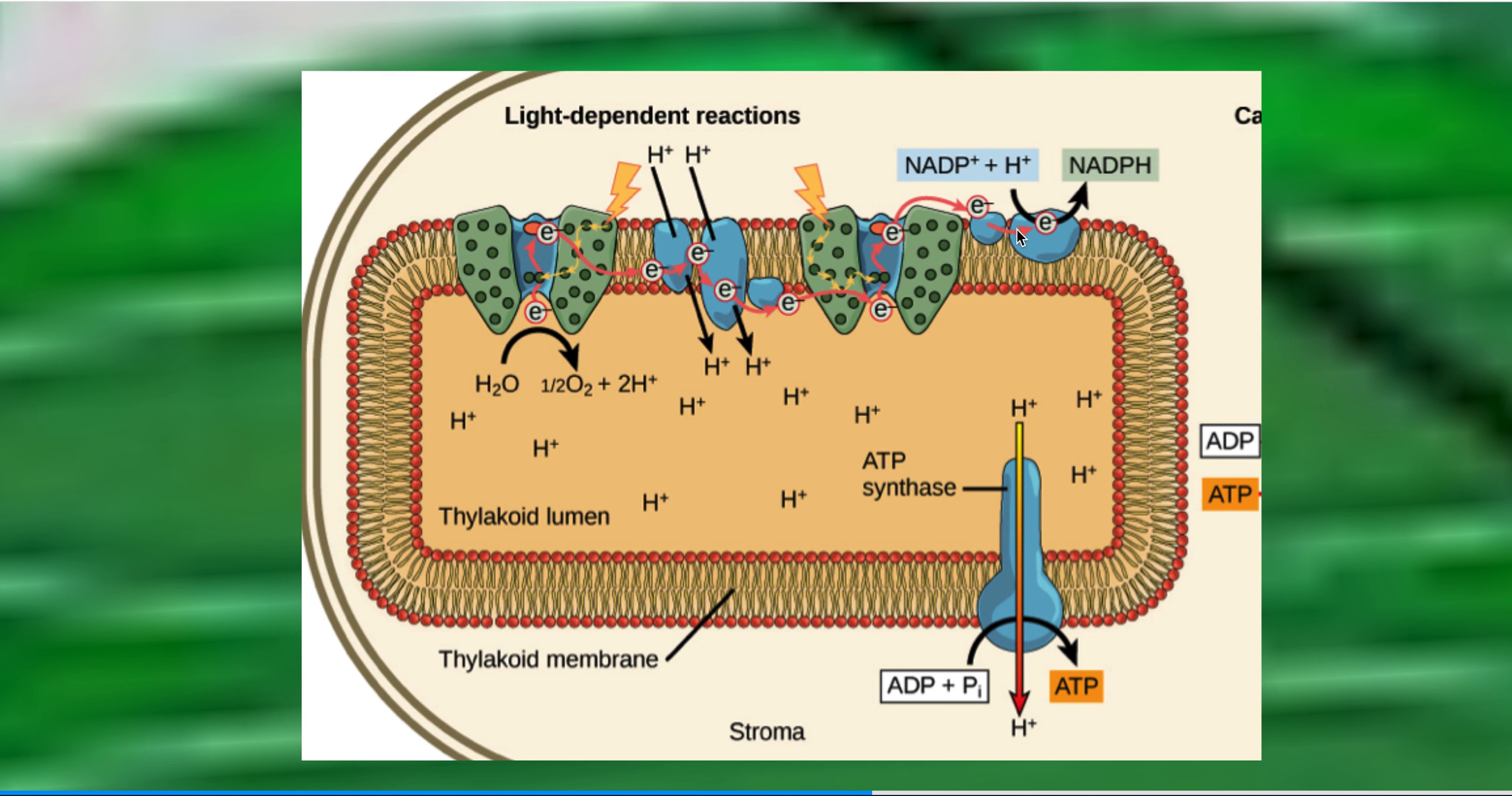So those are the light dependent reactions. There's actually a lot more we could go into, like, for example, what the heck is light anyways? This light that the plant absorbs is pretty much red or blue, and it doesn't absorb green, which is why plants appear green. But I think we're going to leave the light reactions there.